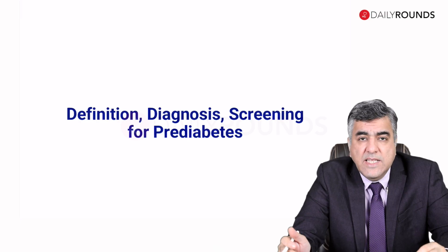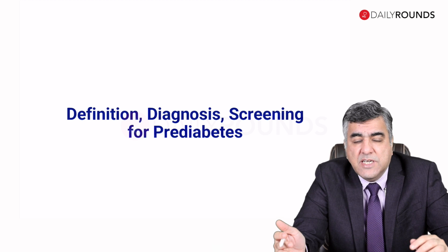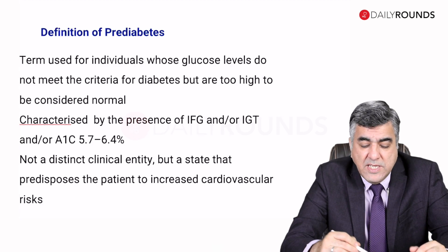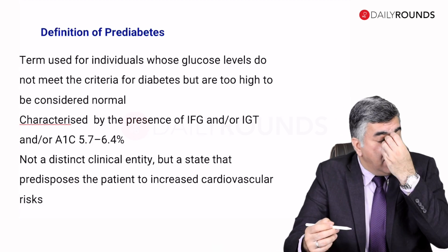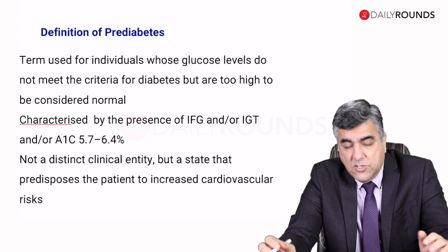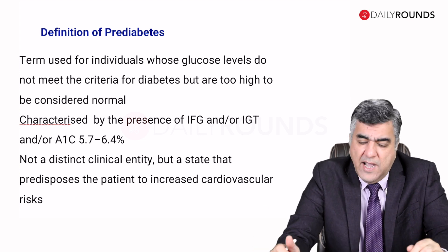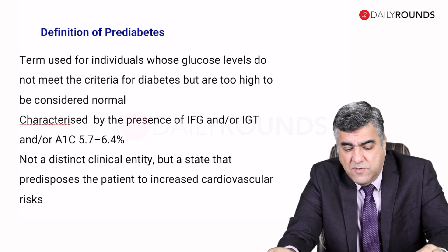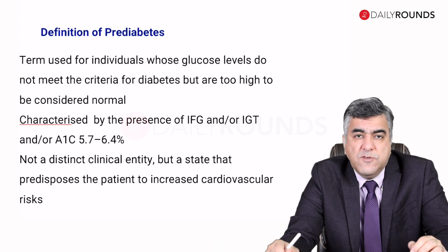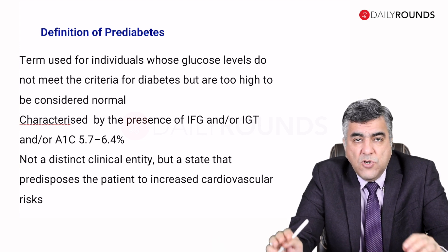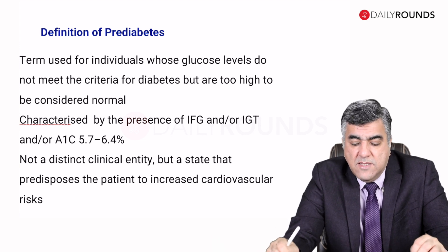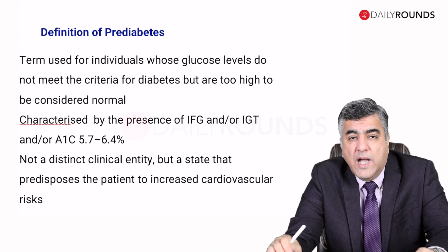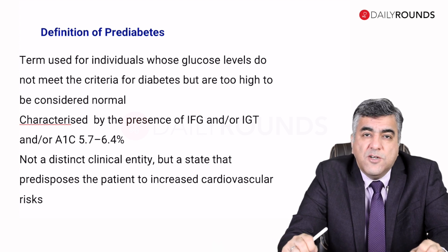Let's begin with understanding the definition, diagnosis and screening for prediabetes — what are the numbers and what are the recommendations? Prediabetes is a term used for individuals whose glucose levels do not meet the criteria for diabetes but are too high to be considered normal.